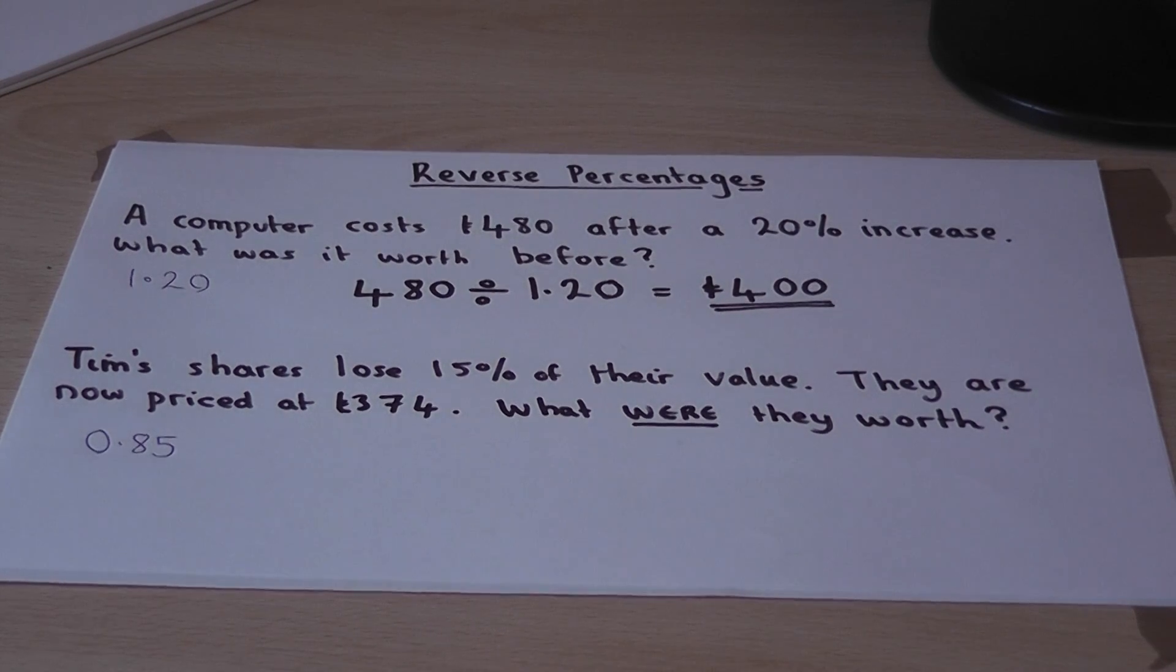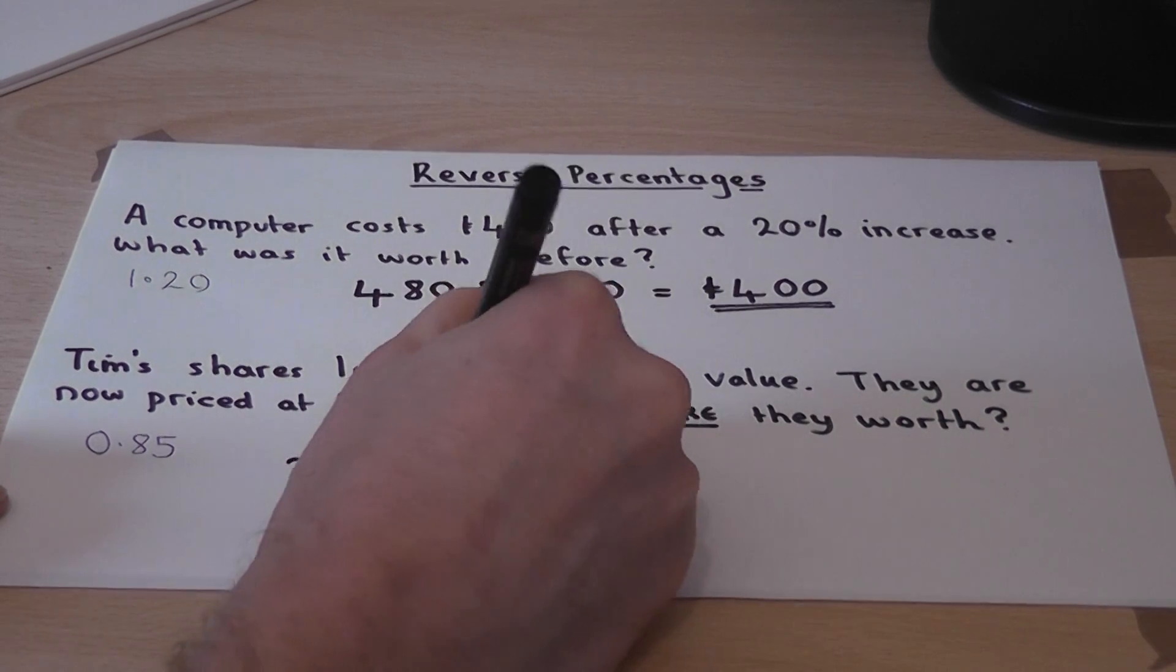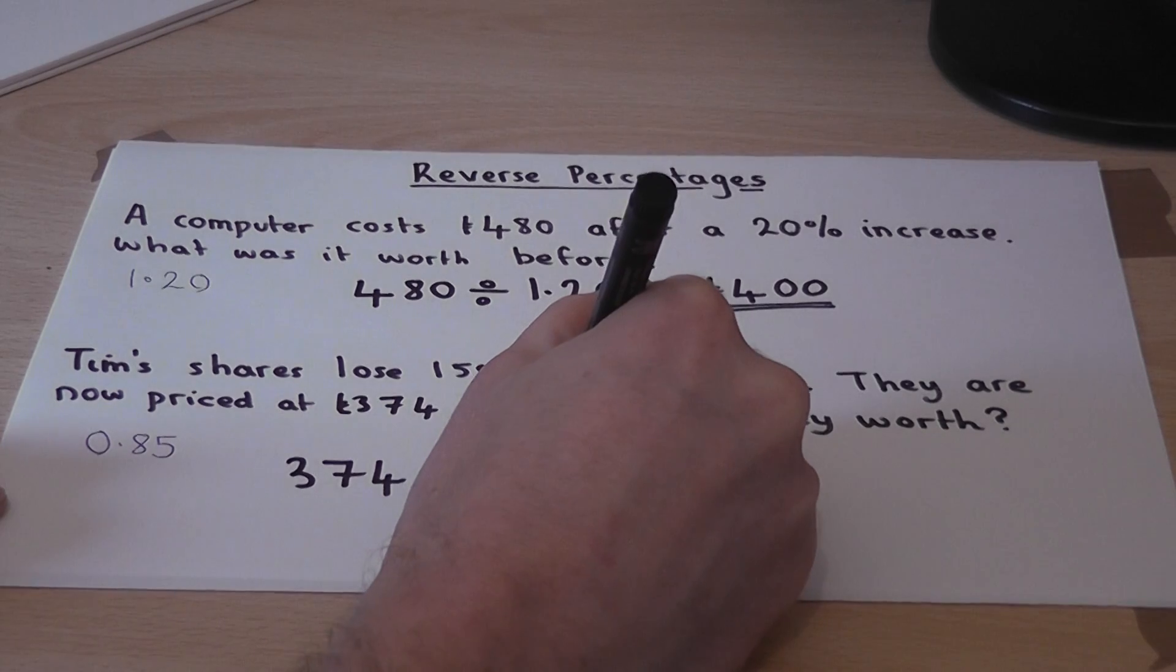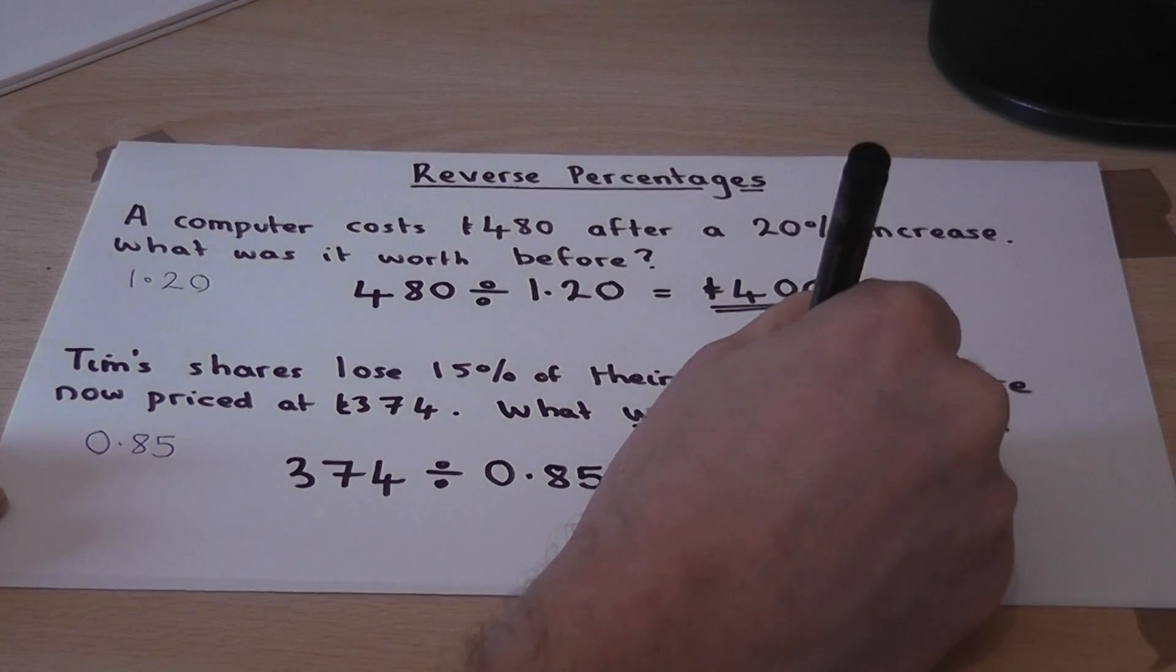So we get this new amount and divide by the percentage equivalent, which gives us £440.